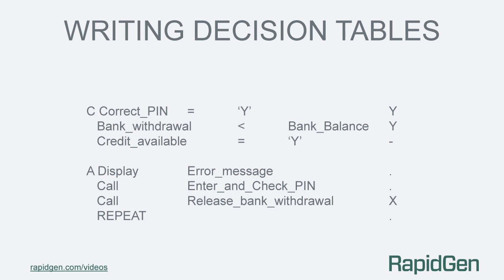We dot the actions except the one we want to perform for these conditions, which is to dispense the money. In our example this is a call to the decision table routine release bank withdrawal.